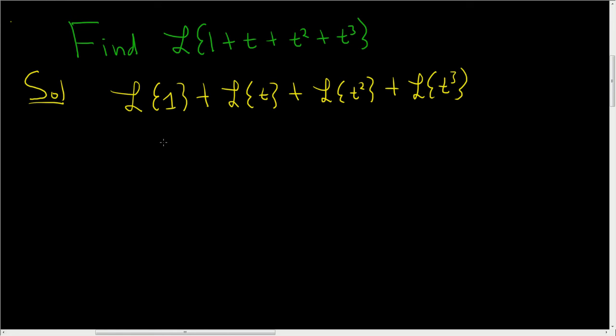The Laplace transform of 1 is 1 over s, right? Here there's a 1, so you write 1 factorial, and it's always 1 higher on the bottom, so s squared. Plus there's a 2 here, so it's 2 factorial.